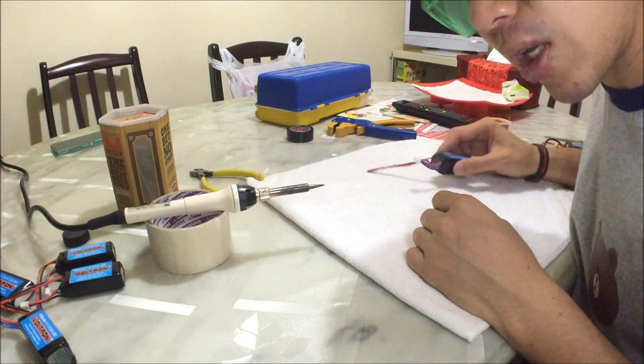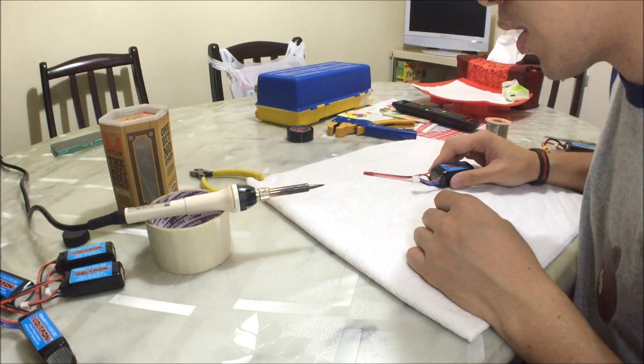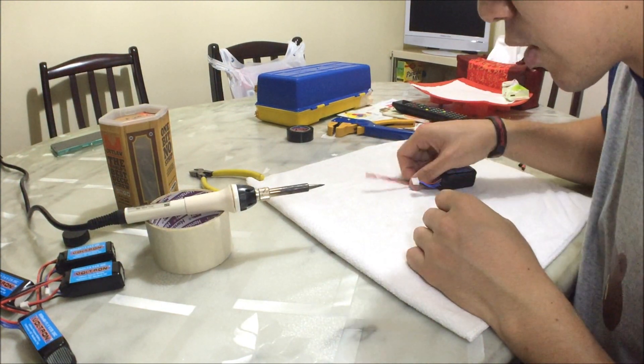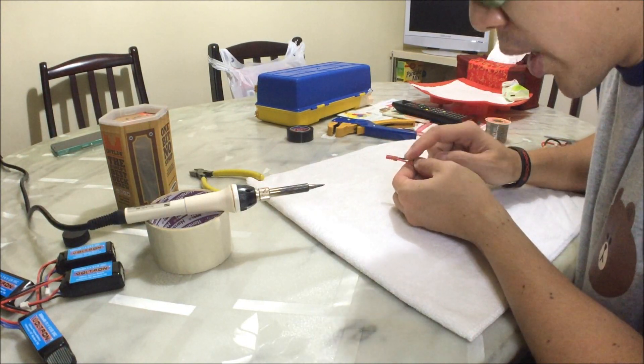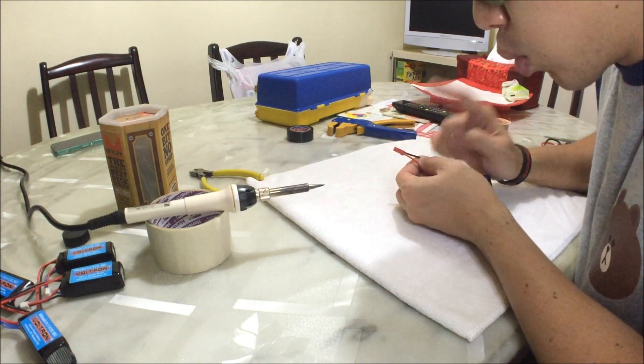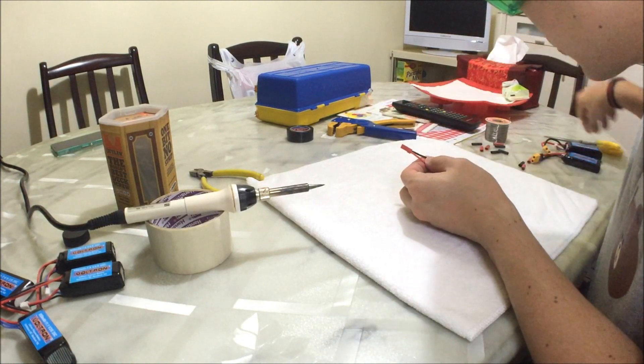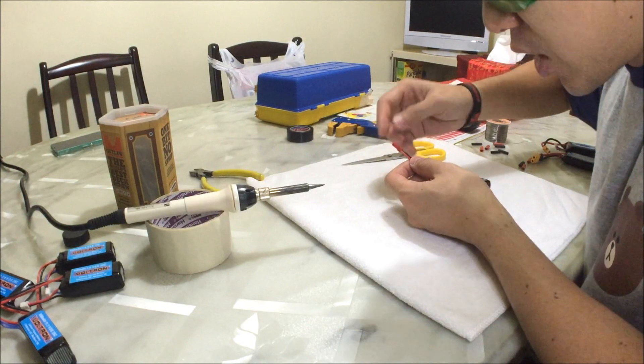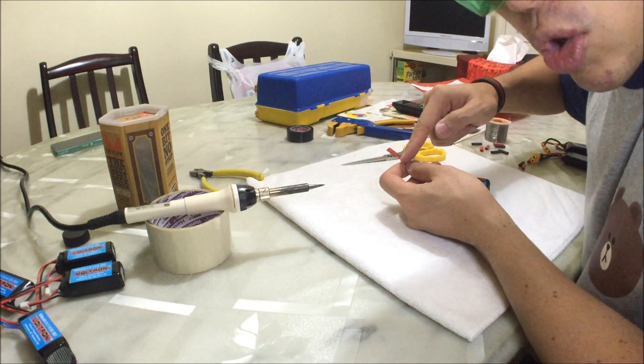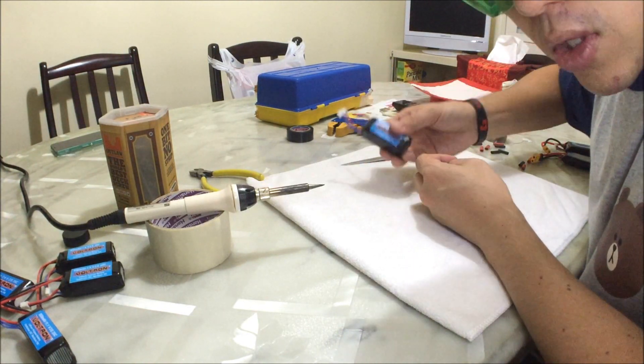All right, so the next step is the simplest yet the most important step and that is to begin cutting the wire off. Now, what you want to do is always cut one at a time. Remember that cut one at a time because if you use a pair of scissors and you cut it across directly, there's a chance that you might accidentally short the whole thing and it might cause this to blow up.